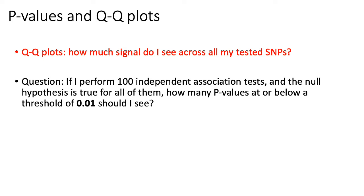Typically in human studies, for example, you might test anywhere between 600,000 and 5 million SNPs across the genome. What a QQ plot tries to tell you is it tries to answer the question: across all of the hundreds of thousands or millions of SNPs that I test, how much signal do I see — approximately how many genetic variants do I see as being associated across all the SNPs that I test?